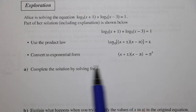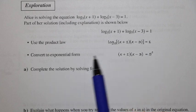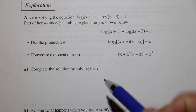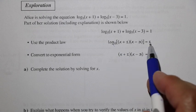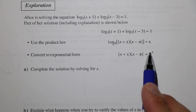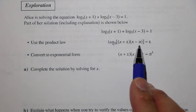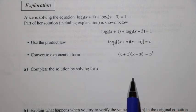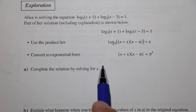Then she's going to convert to exponential form. She took this base, 5, to the exponent 1, which is equal to the expression (x plus 1) times (x minus 3). We're going to complete the solution by solving for x.